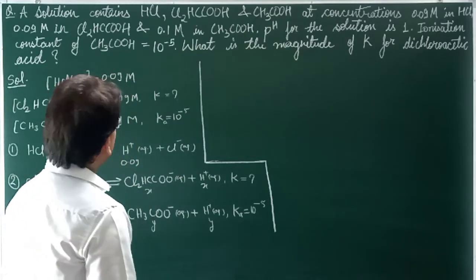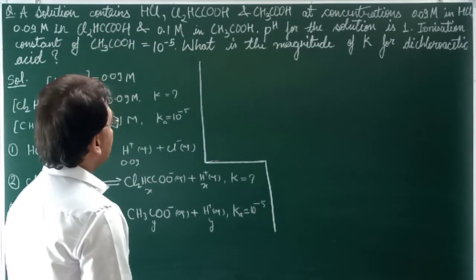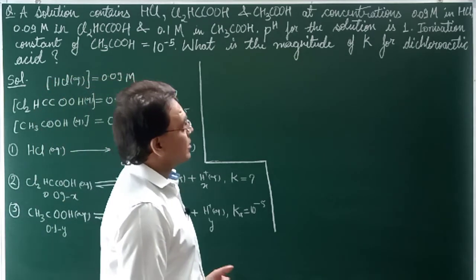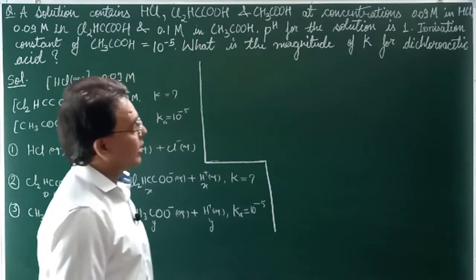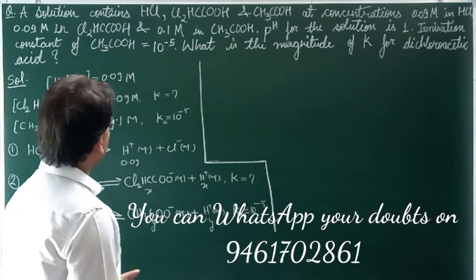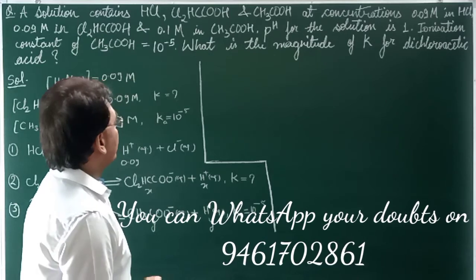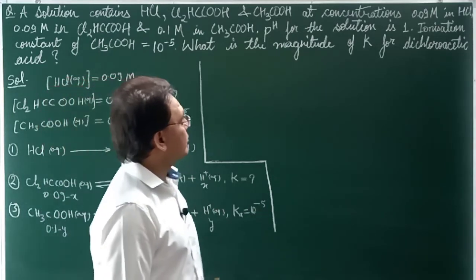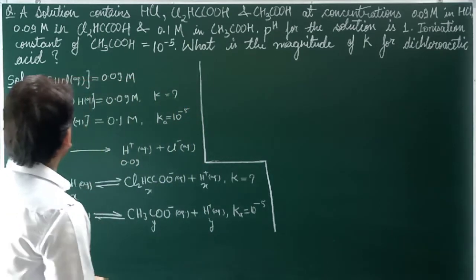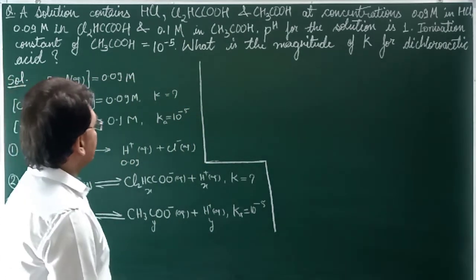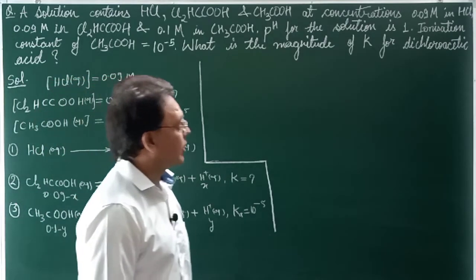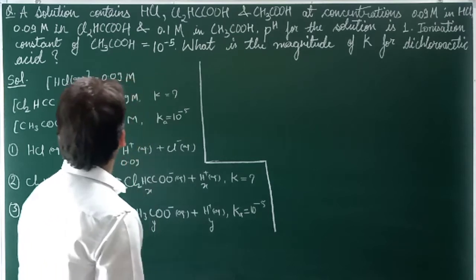The question is: a solution contains HCl, Cl₂HCCOOH (Dichloroacetic Acid), and CH₃COOH at concentrations 0.09 M in HCl, 0.09 M in Cl₂HCCOOH, and 0.1 M in CH₃COOH. The pH of this solution is 1. The ionization constant of CH₃COOH is equal to 10 to the power minus 5. What is the magnitude of K for Dichloroacetic Acid?